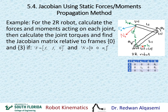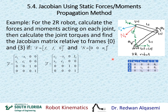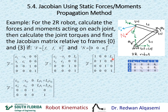If we go through assigning the frames and finding the DH parameters, we find them as shown in the table. From the DH parameters, we can find T0,1, T1,2, and T2,3. Multiplying all these transformation matrices together gives us the total transformation matrix T0,3.